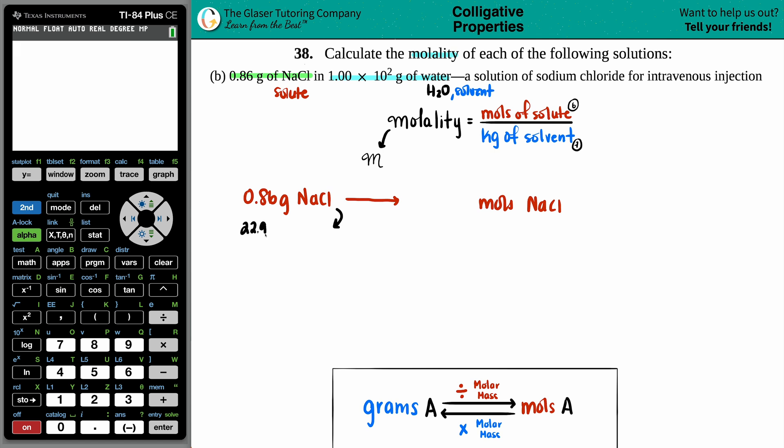Na is 22.99 plus chlorine, which is what, 35.45? So 22.99 plus 35.45. I get 58.44. So I'm going to take the 0.86 and divide it by the 58.44. There we go. And I get 0.0147.